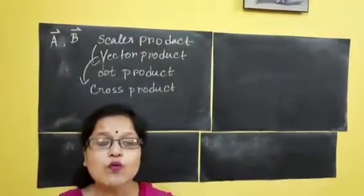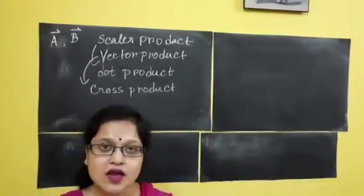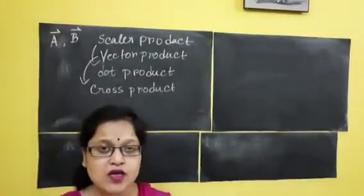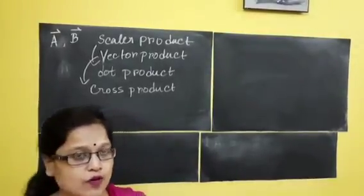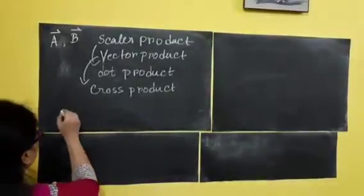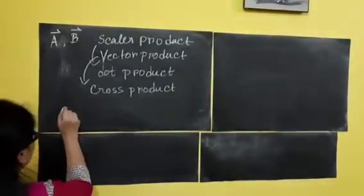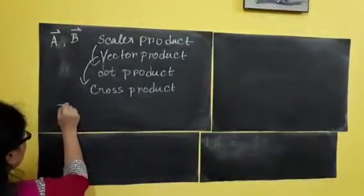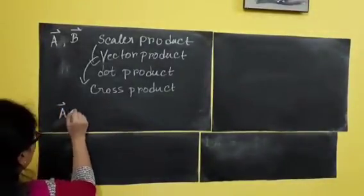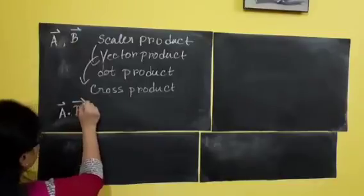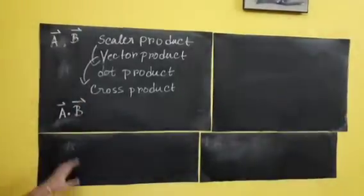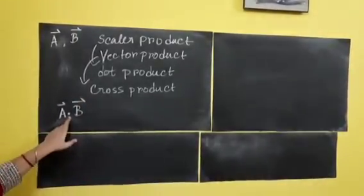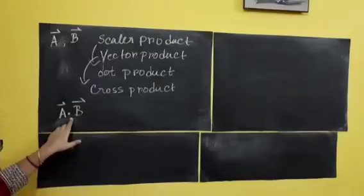If I tell you to do multiplication between vector A and B in terms of scalar multiplication, then what will you do? You will write it like this: vector A dot B. This is the scalar product sign.